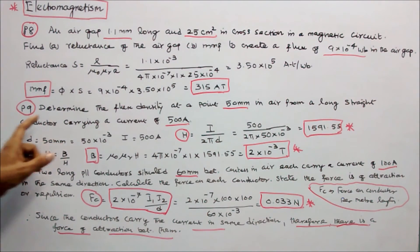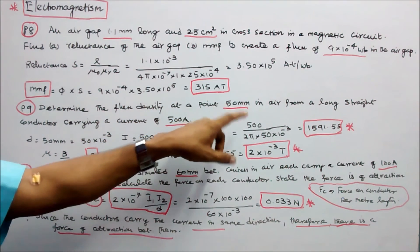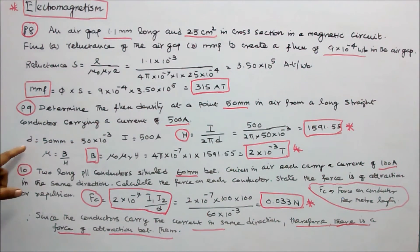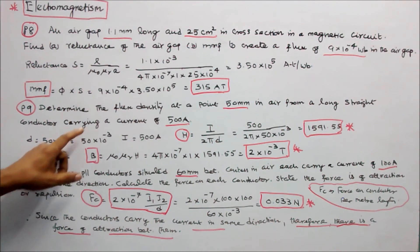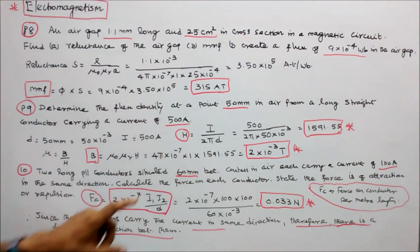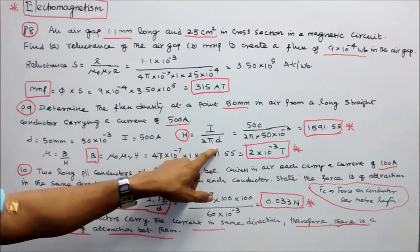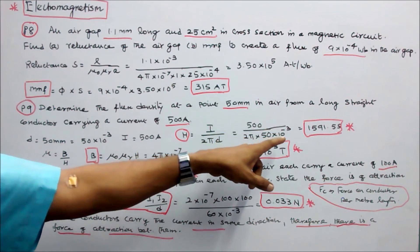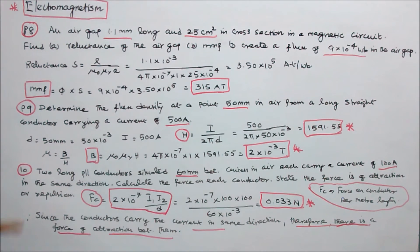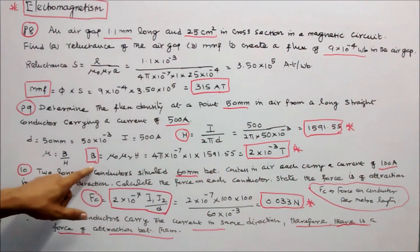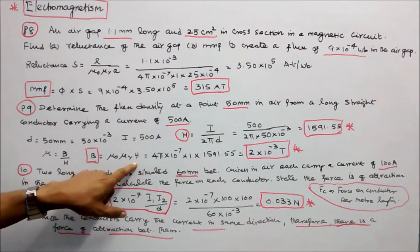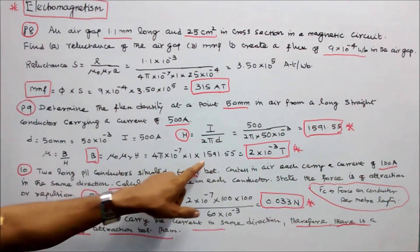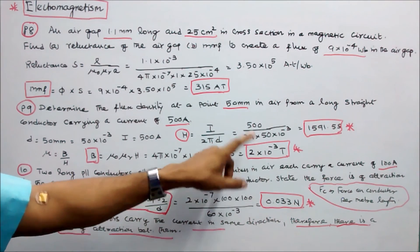Problem number 9. Determine the flux density at a point 50 mm in air from a long straight conductor carrying a current of 500 amps. D equals 50 into 10 power minus 3 meters, I equals 500 amps. H equals I divided by 2π into D: 500 divided by 2π into 50 into 10 power minus 3 equals 1591.55 ampere turns per meter. B equals mu0 into muR into H. Mu0 equals 4π into 10 power minus 7, muR equals 1, H equals 1591.55. B equals 2 into 10 power minus 3 tesla.